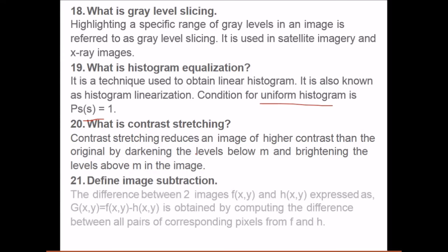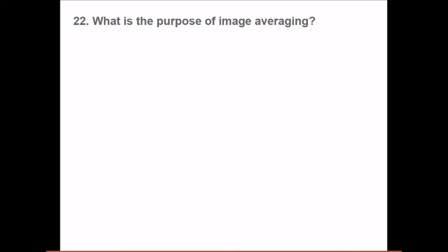Define image subtraction. The difference between two images, f(x,y) and h(x,y), is expressed by subtracting those images. This is obtained by computing the difference between all pairs of corresponding pixels from f and h. If you want to find change detection, then image subtraction is one of the methods.